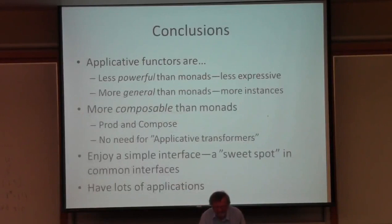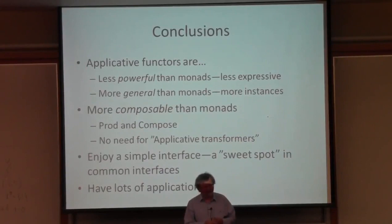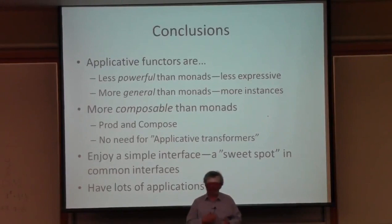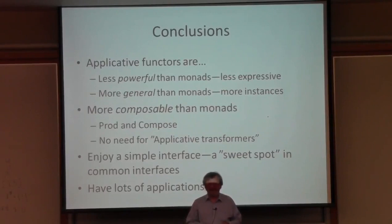So what have I shown you? I've shown you applicative functors. They're very interesting — they're less powerful than monads, less expressive; you can't define bind in terms of the applicative functor operations. But that at the same time makes them more general than monads: there are more instances of functors and those new instances do really useful things. They're much more composable than monads, which I've used to construct both of these applications, meaning there's no need for anything corresponding to monad transformers.